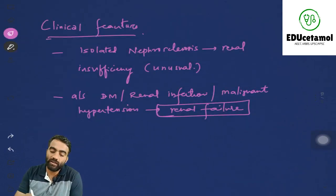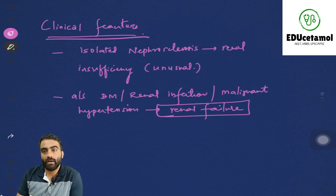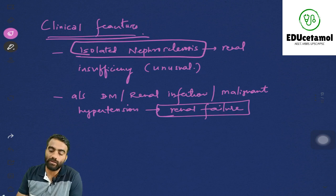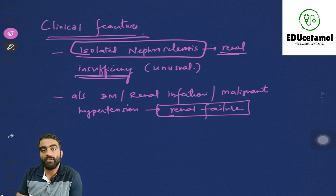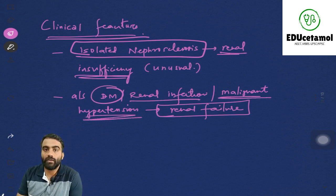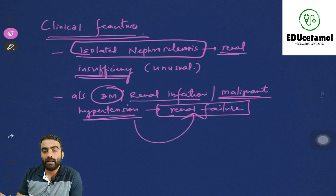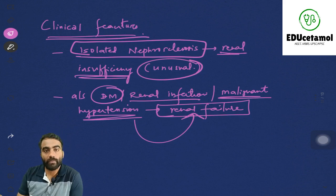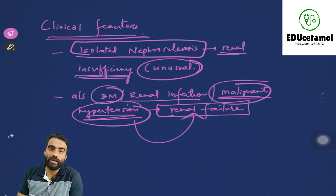Regarding clinical features: mild hypertension even over a long term can cause some damage, but in isolated nephrosclerosis without comorbidities like diabetes, it rarely causes renal insufficiency. However, when hypertension is not under control — when systolic rises beyond 200 — or when associated with diabetes, renal artery disease, or when it turns to malignant hypertension, then it is going to cause renal failure. Benign nephrosclerosis rarely causes renal failure on its own; only when associated with other comorbidities or when it becomes accelerated or malignant hypertension does significant damage occur.